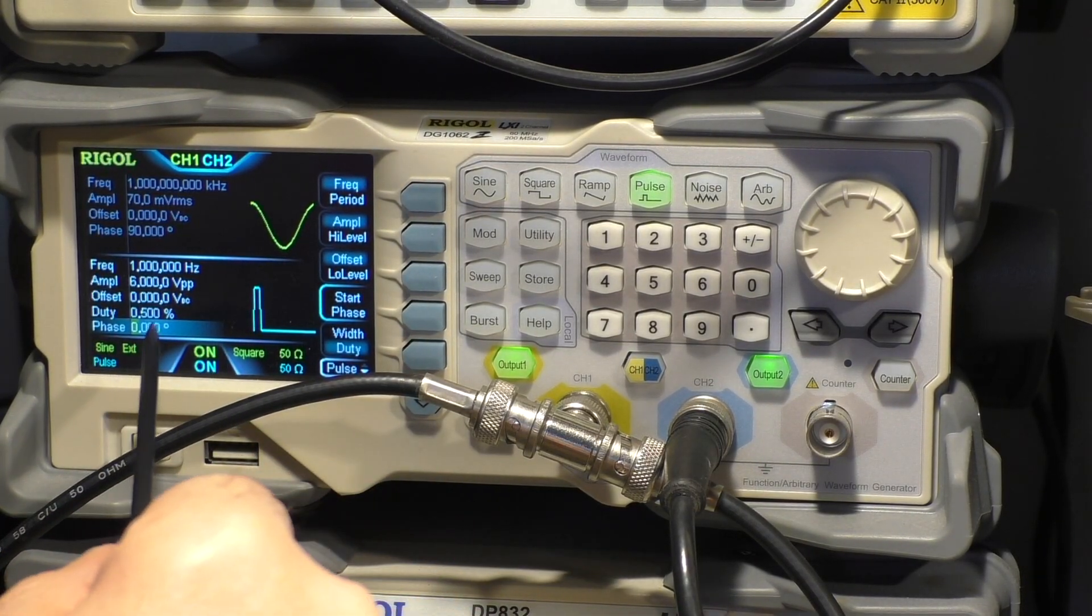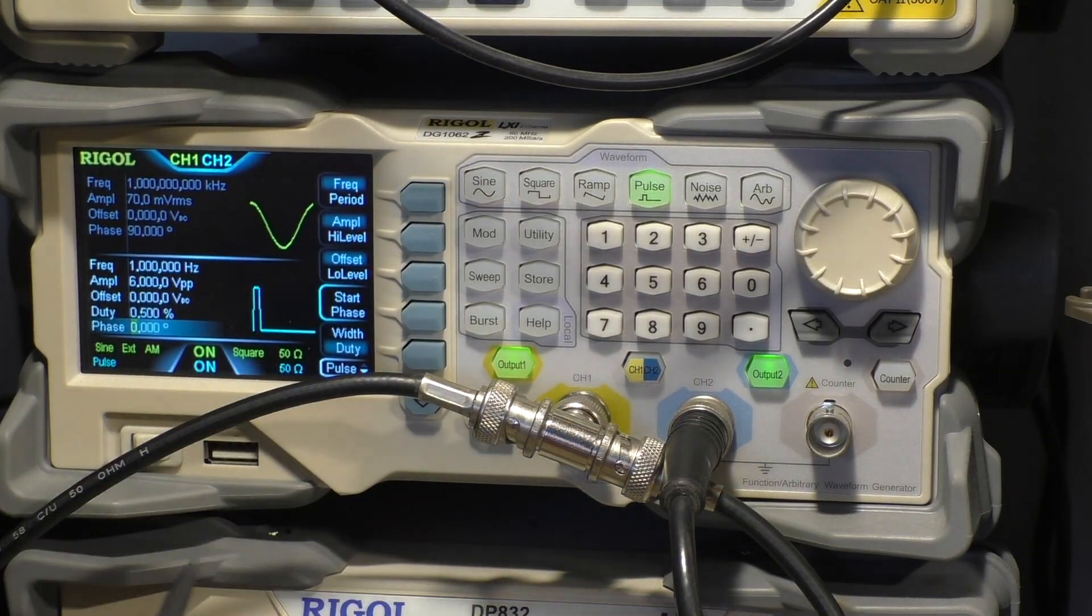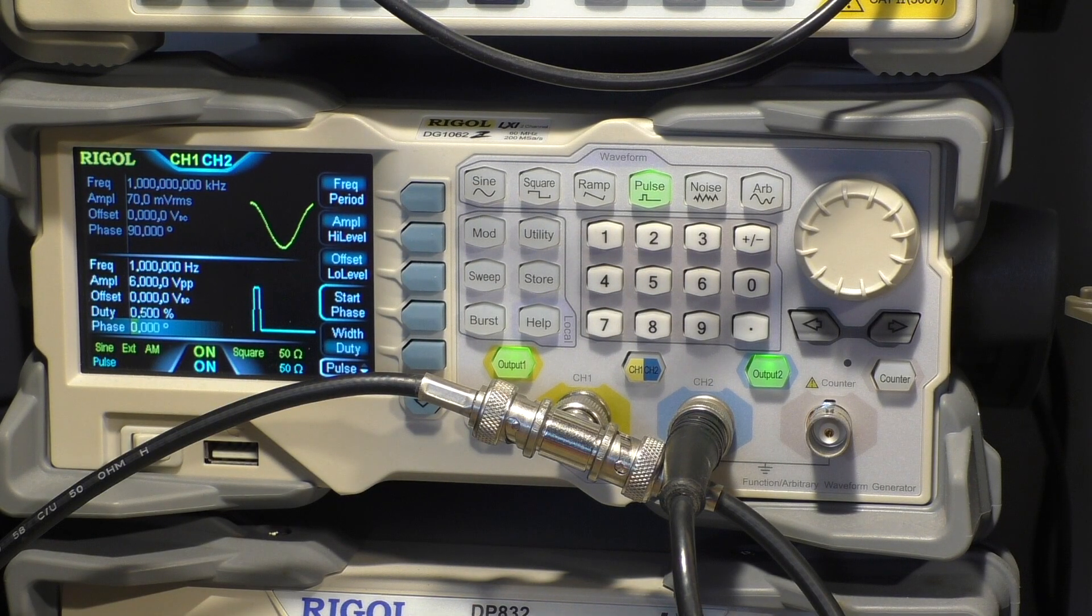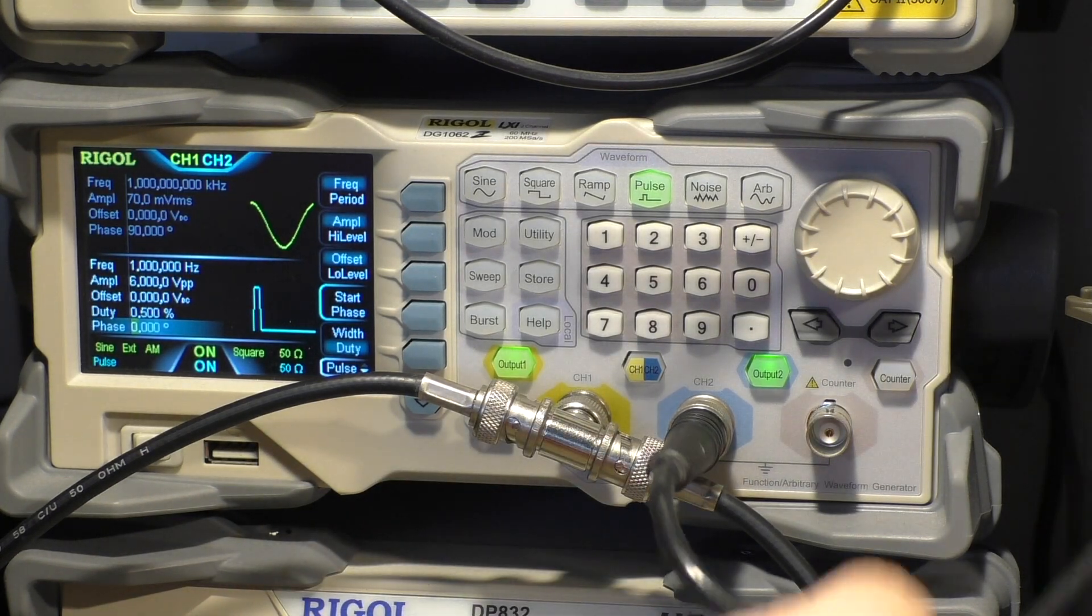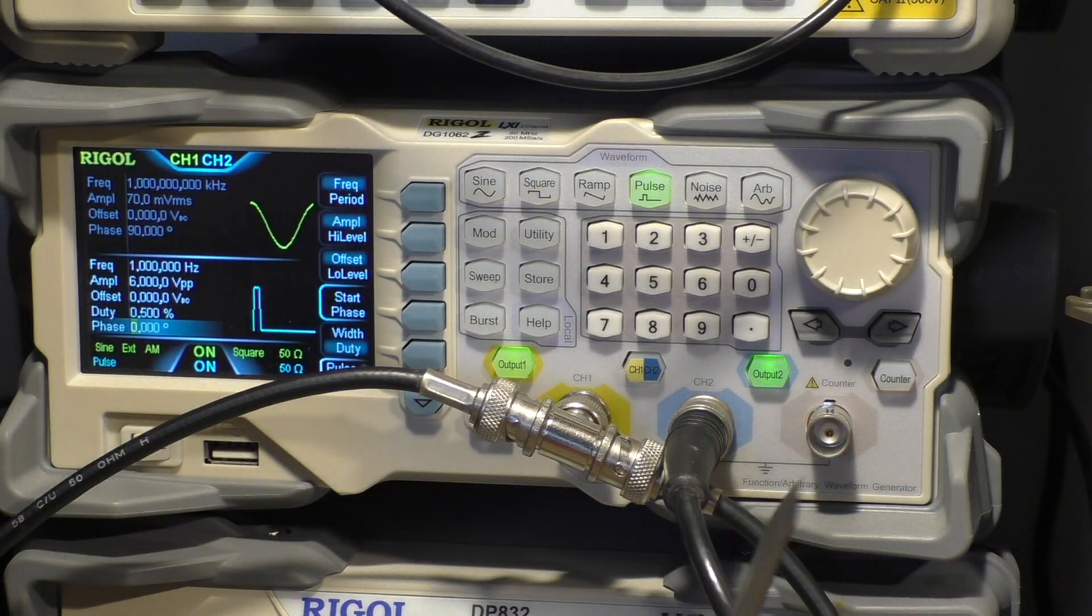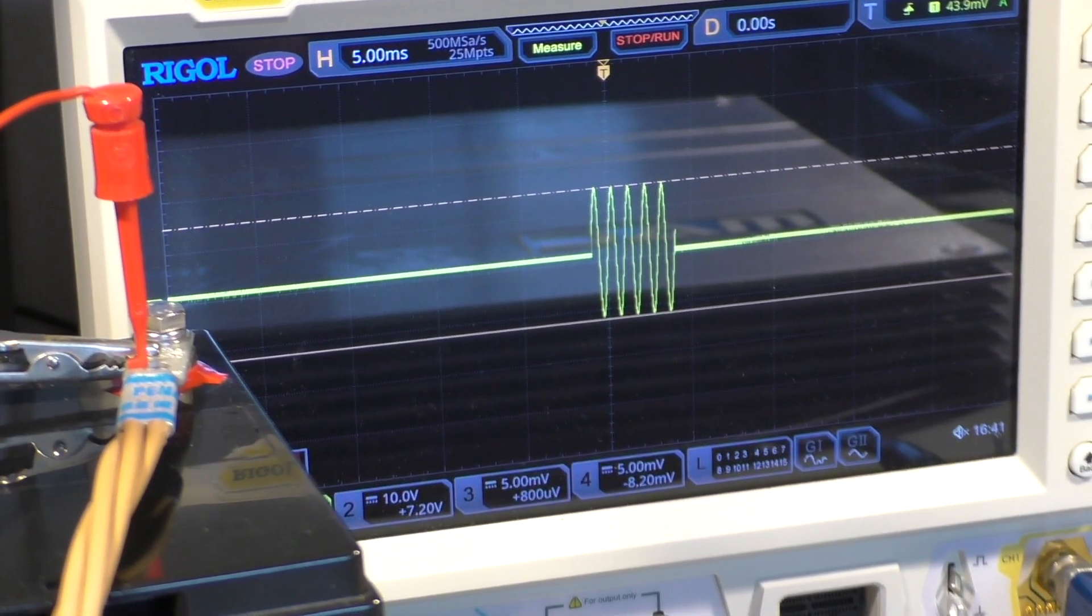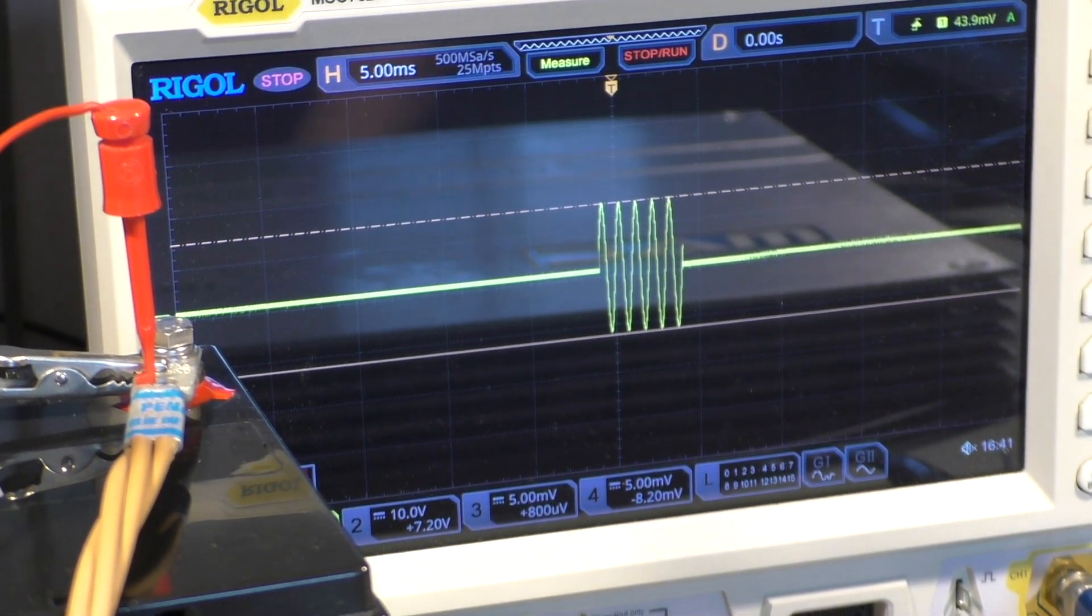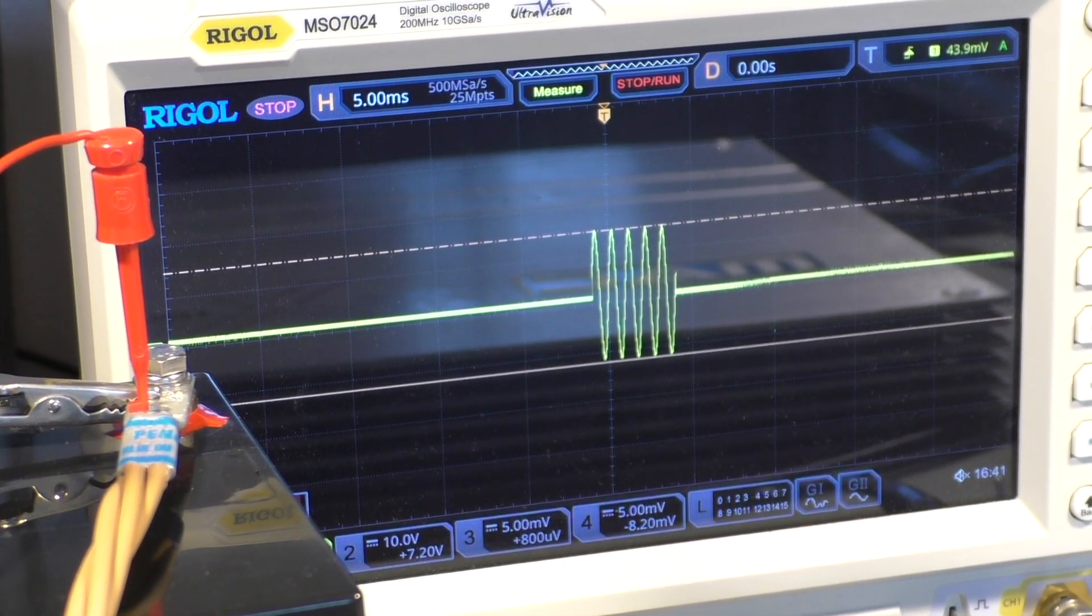With the duty cycle of 0.5 percent, so it's only a very small pulse. And I'm modulating that. We are the output going to the modulating input of channel one, and the result is something like that, a short burst of sine wave. Here we have one, two, three, four, five.